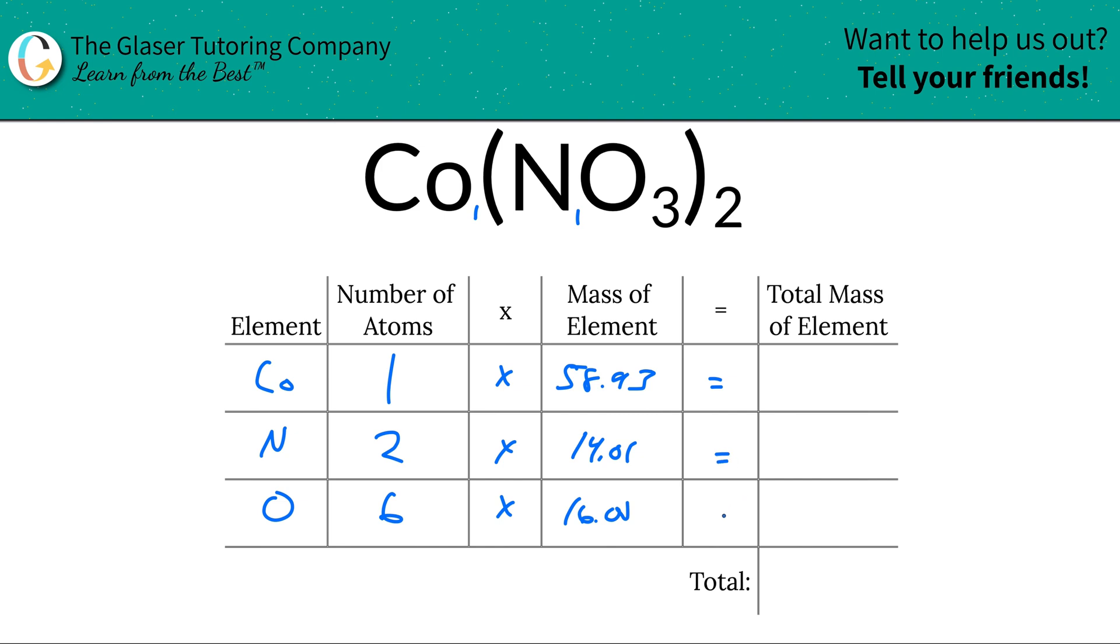Then we're going to find the total mass of that particular element in the compound. What we do is we take the mass of a single atom or a single mole, and we're going to multiply it by the number of atoms or number of moles. You can also consider that to be the number of moles. The numbers are the same.